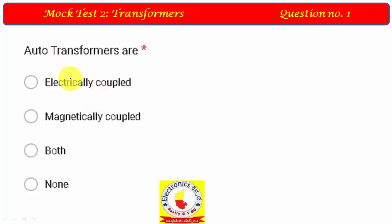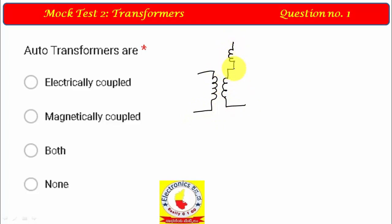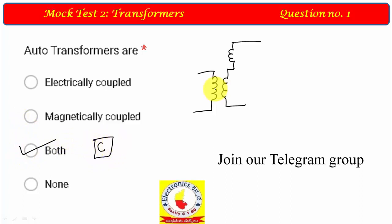Question 1: Auto transformers are — electrically coupled, magnetically coupled, both electrically and magnetically coupled, or none of the above? In the case of an auto transformer, it is magnetically coupled as well as electrically coupled. A normal transformer is only magnetically coupled, providing isolation. So the first question answer is option C — both magnetically and electrically coupled.